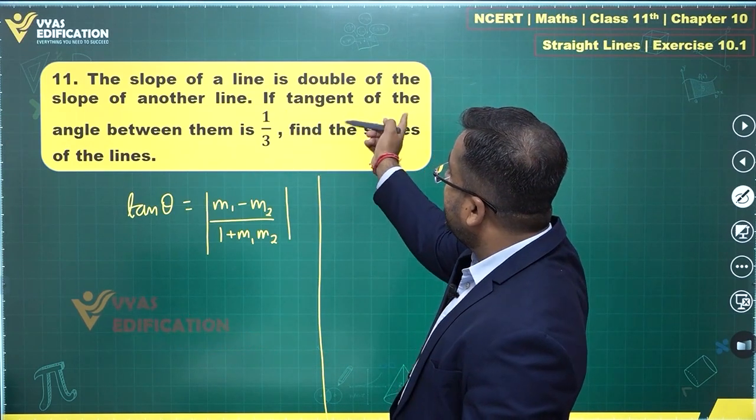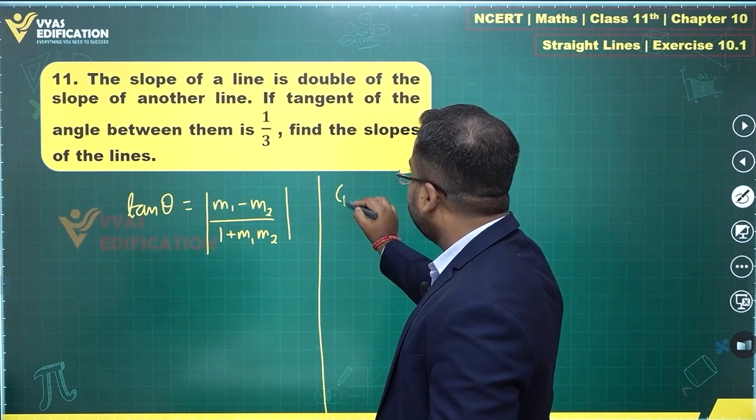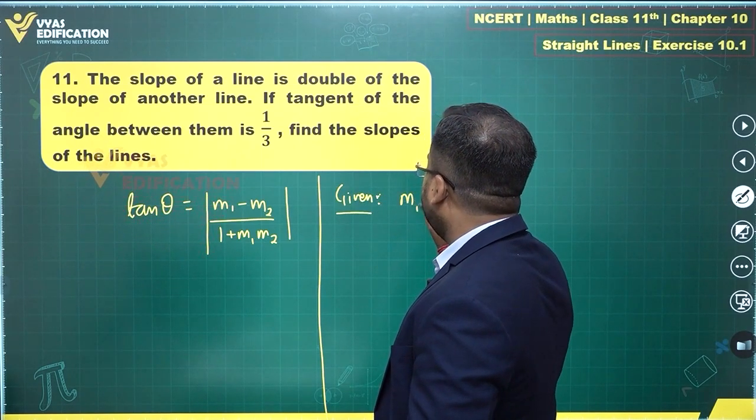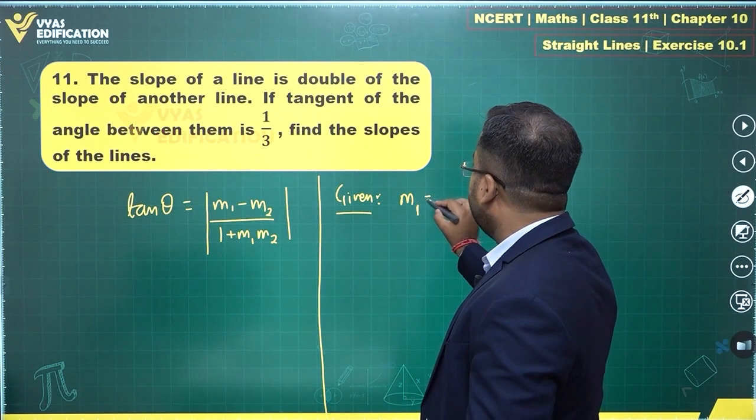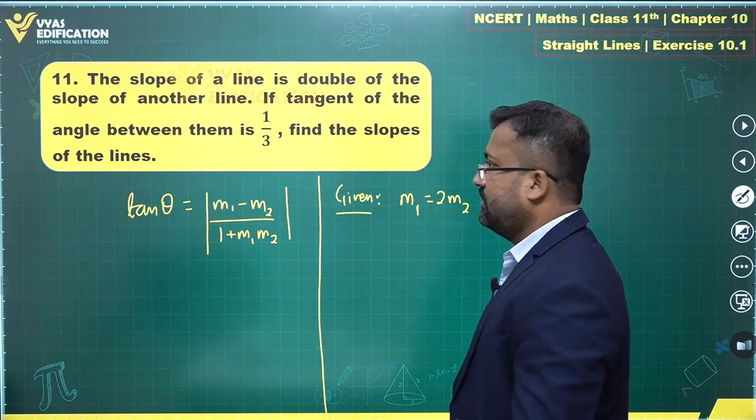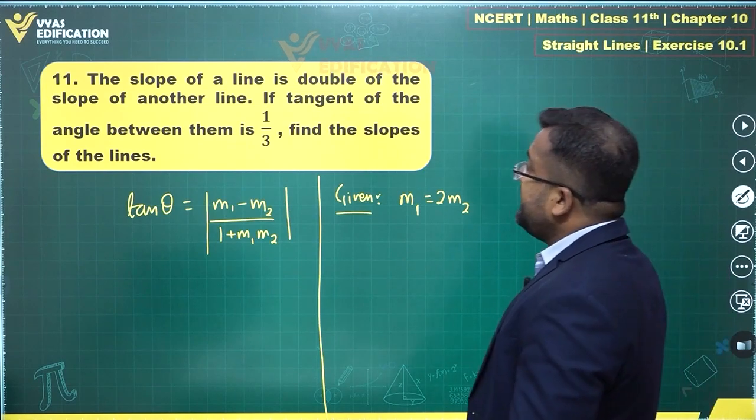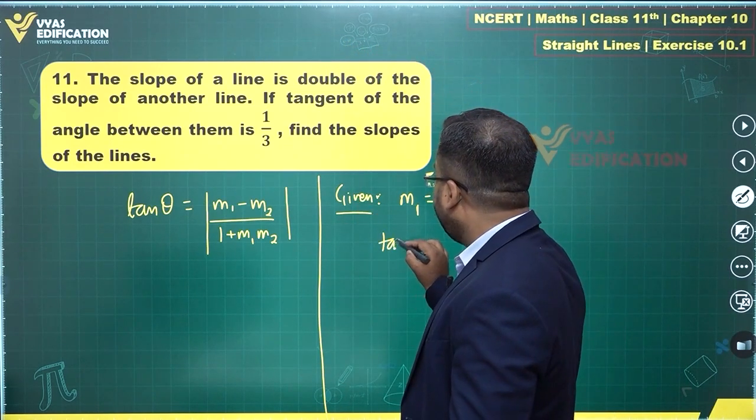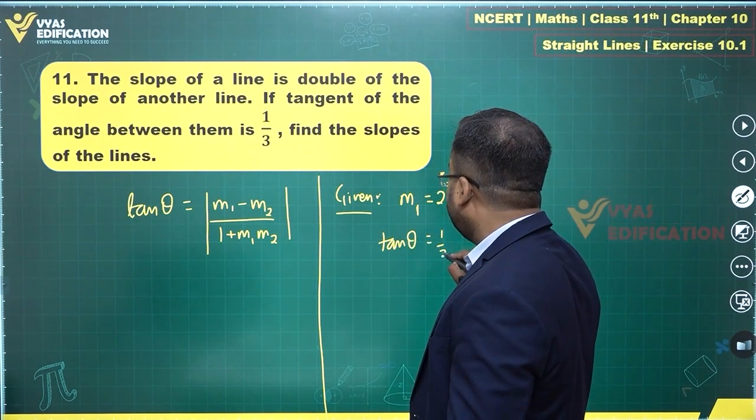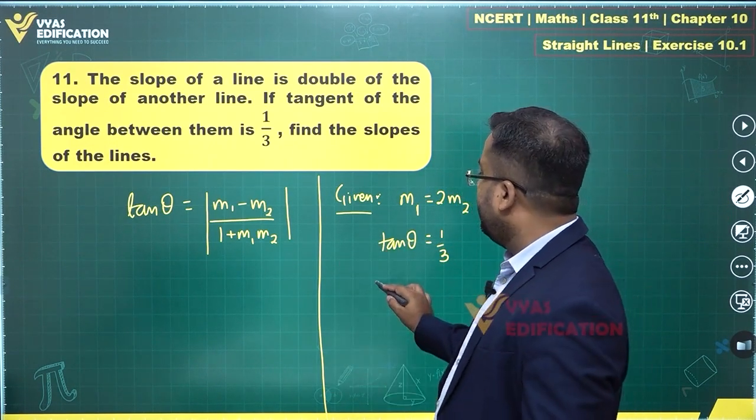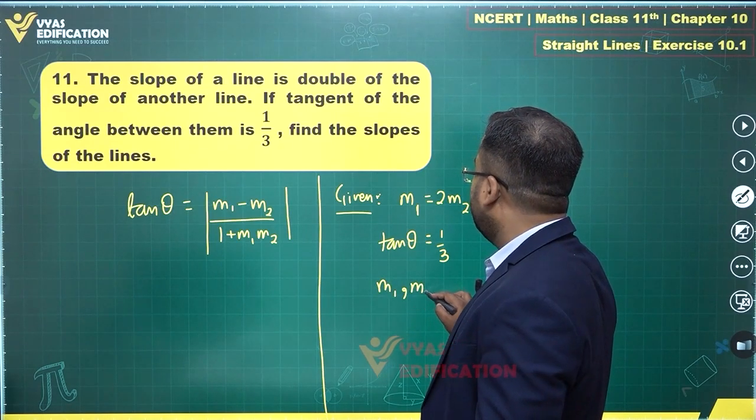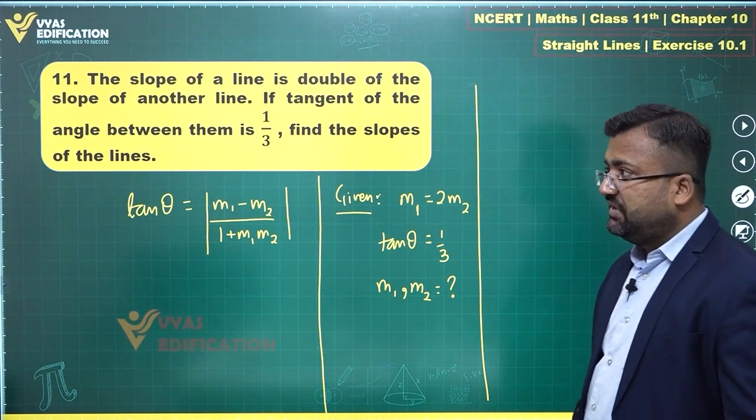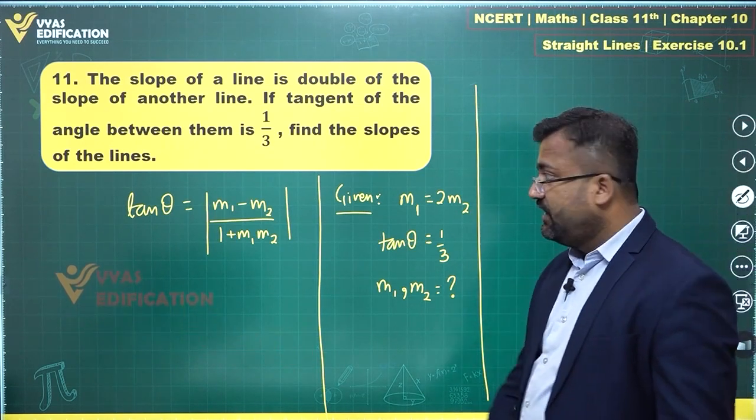The slope of a line is double the slope of another line. So it is given that M1 slope of one line is double the slope of other line. If the tangent of the angle between them is 1 by 3, it is given that tan theta is equal to 1 by 3. Find the slopes of the line M1, M2 are unknown. Can you find M1 and M2?